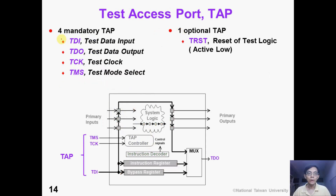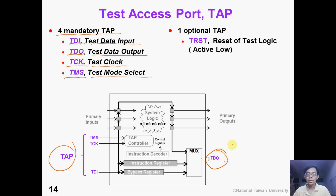In JTAG, we have four mandatory test access ports, or TAP. TDI stands for test data input. TDO stands for test data output. TCK means test clock. TMS is a control input, which stands for test mode select. So we have three input test access ports and one output test access port. If you have an extra pin available, there is one optional test access port: TRST, which is a reset of test logic. This is an active low input.